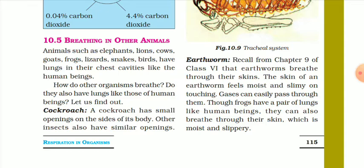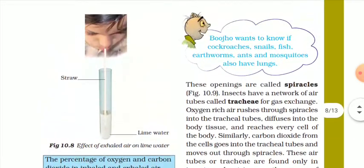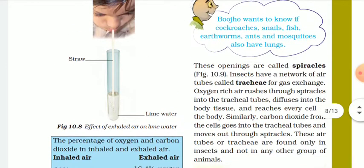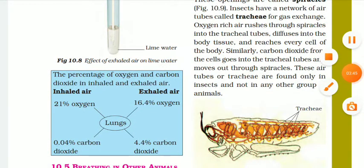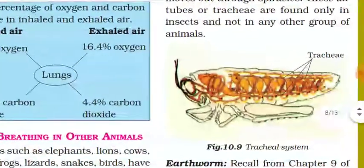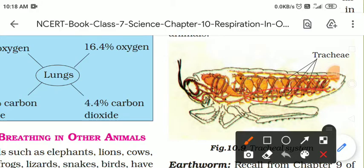Cockroach has small openings on the sides of its body. So there are small openings on the sides of the cockroach's body. Other insects also have similar openings. These openings are called spiracles. In figure 10.9 we can see — here on the sides there are holes that you can see. You can see them in your book — some holes are visible on the sides.